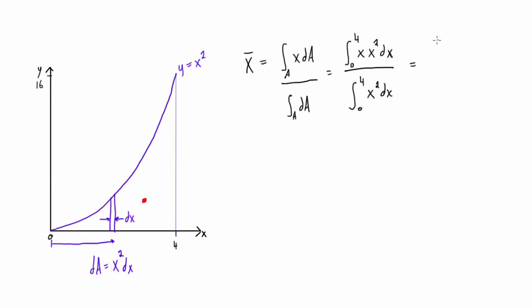Let's just make this a little bit easier to see. So we have 0 to 4, we can combine these to x cubed dx, and this is all over that same thing, 0 to 4, x squared dx, just like that.